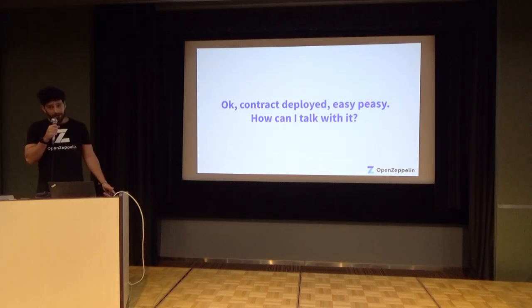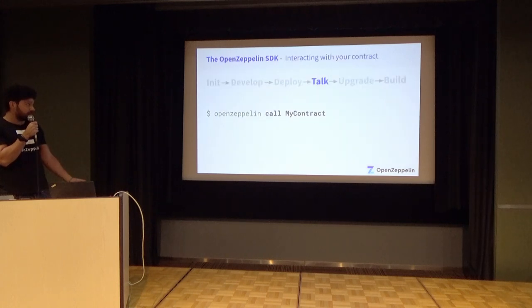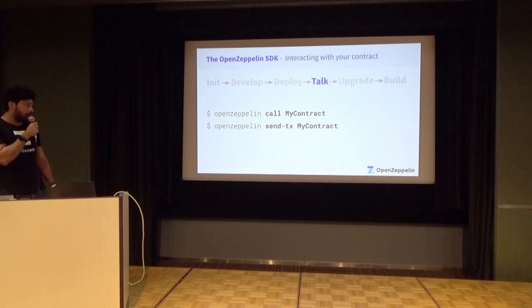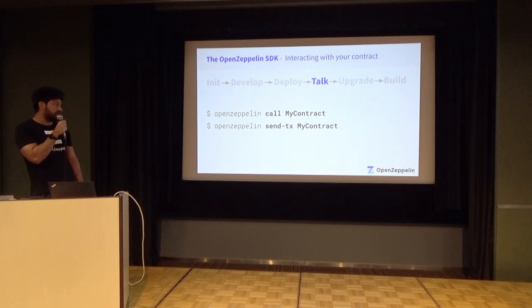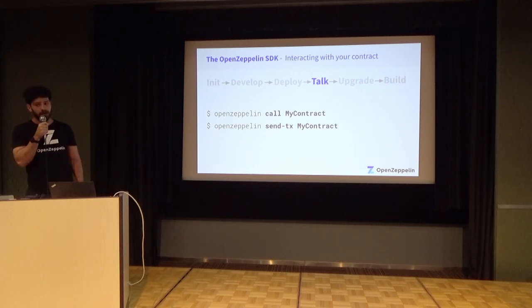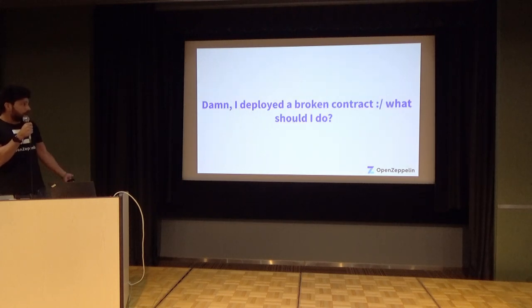Now that we have our contract deployed, we probably want to interact with it, which is super easy. The OpenZeppelin CLI has two handy commands: call and send-transaction. Call is for invoking pure or view functions, and send-transaction is for calling any other public function that will make a transaction to the blockchain. Both are super easy to use.